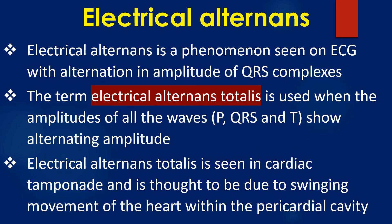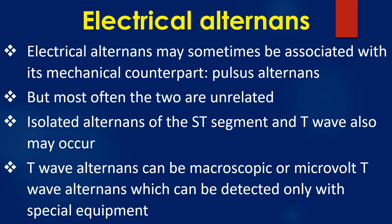Electrical alternance is a phenomenon seen on ECG with alternation in amplitude of QRS complexes. The term electrical alternance totalis is used when the amplitudes of all waves — P, QRS, and T — show alternating amplitude. Electrical alternance totalis is seen in cardiac tamponade and is thought to be due to the swinging movement of the heart within the pericardial cavity. Electrical alternance may sometimes be associated with its mechanical counterpart, pulse alternance.